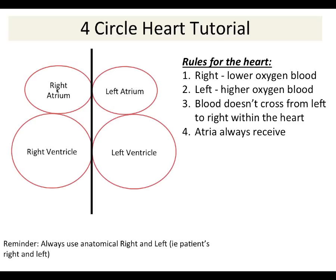The left atrium receives blood from the pulmonary circulatory system — specifically from the pulmonary veins. So the right atrium receives systemic blood, which will be deoxygenated blood, and the left atrium receives blood from the pulmonary system, which will be higher-oxygen blood.